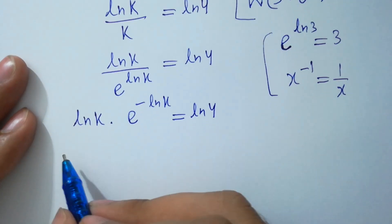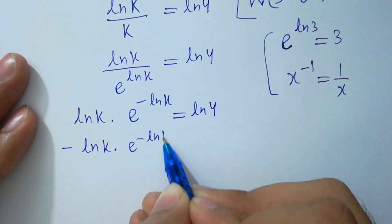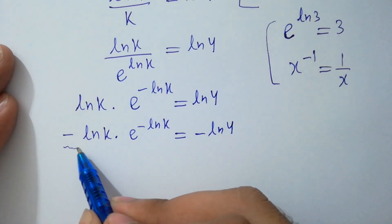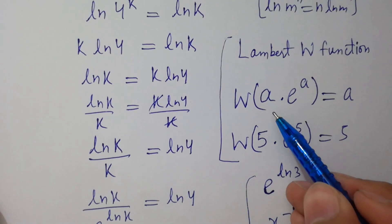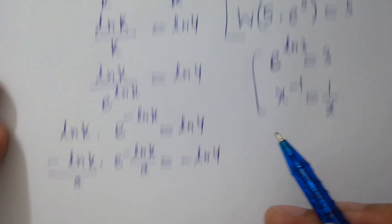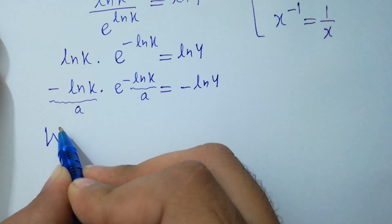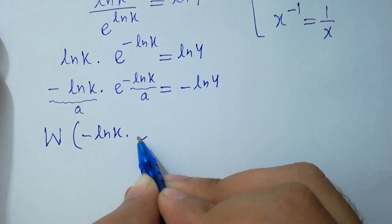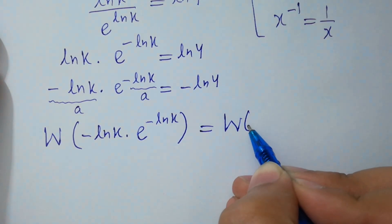Multiply by minus on both sides: minus ln k times e to the power minus ln k equals minus ln 4. This matches the form a times e to the power a. Applying Lambert W function on both sides: minus ln k equals W of minus ln 4.